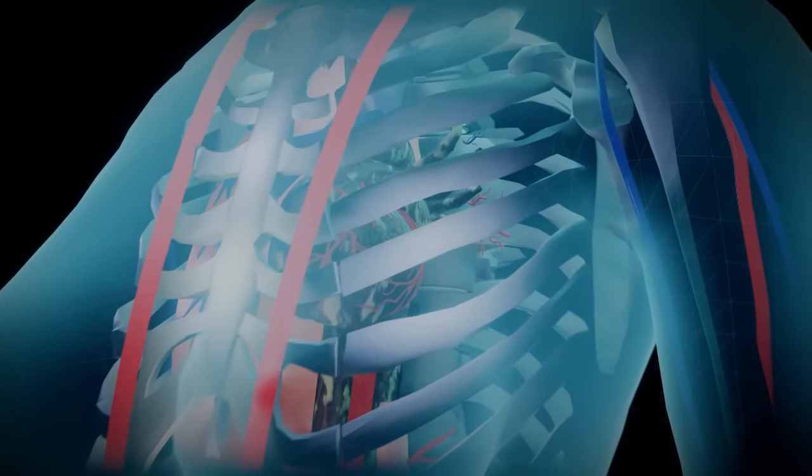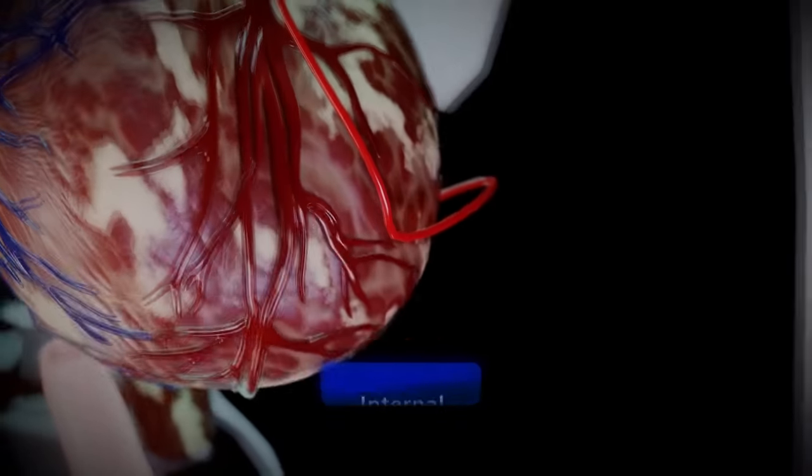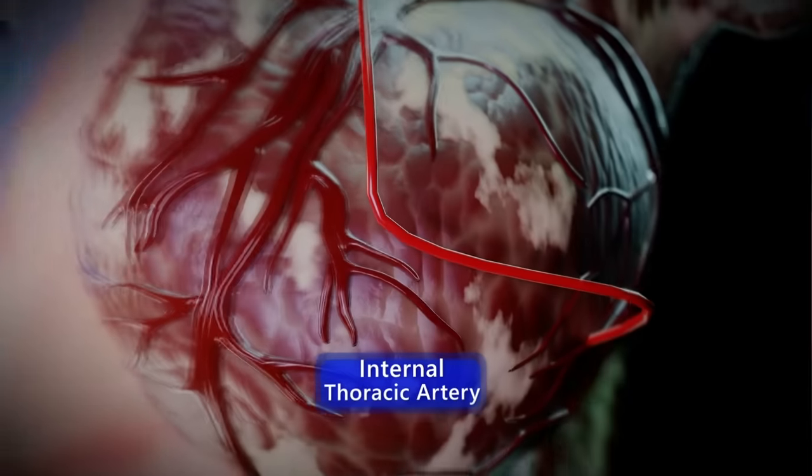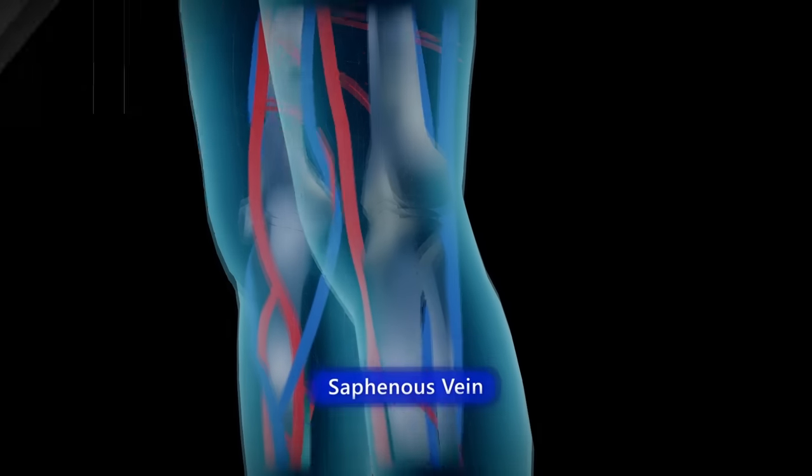allowing the heart to stop while the surgeon stitches the grafts in place. One of the two blood vessels that is typically used for grafts is the internal thoracic artery in the chest or the saphenous vein in the leg.